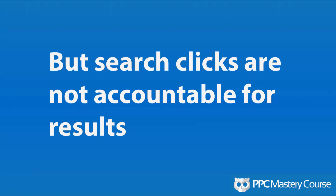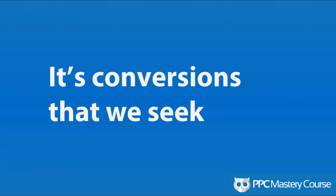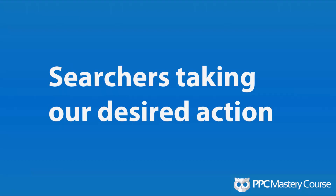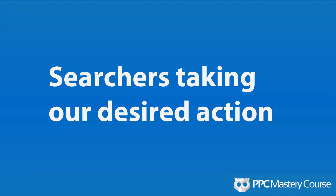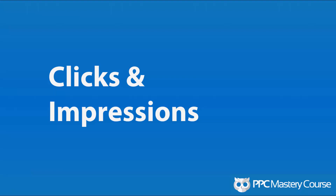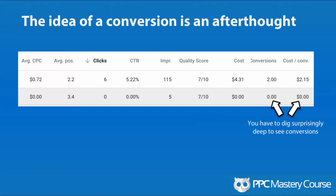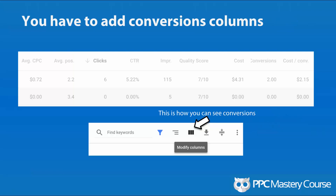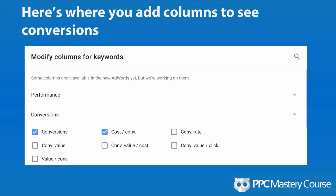But search clicks alone are not accountable for results. They don't really mean anything — it just means that somebody clicked on your ad. It's obviously how Google makes money, but it doesn't provide any indicator of whether somebody became a purchaser, became a lead, or did the action you wanted them to take. It's conversions that we seek — specifically, it's searchers taking our desired action on our website. Google forces clicks and impressions on us as advertisers, but they don't force a conversion agenda. Within the Google AdWords interface, the idea of a conversion is actually an afterthought — it's at the end of the columns. You have to physically modify your columns and add conversions in order to even see those results.